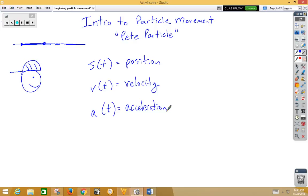Now all of these items are related to each other. Velocity, v of t, is the derivative of position, so v(t) is the derivative of s(t).